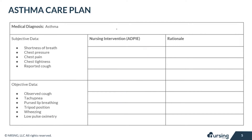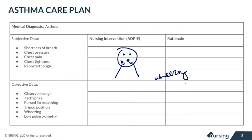Now let's look at our objective data. You might observe your patient coughing because of those bronchial spasms. They might be breathing really fast, have pursed lip breathing, or even sit in a tripod position where they're trying to open up their lungs more. The bronchial constrictions can cause wheezing — you might even hear it without a stethoscope, it might be super loud. The patient's pulse ox will probably be low because of that lack of oxygen.